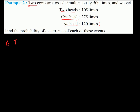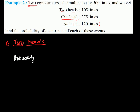Let me first find out the probability of two heads. It's quite simple if you have seen the previous video. As we have learned the probability formula — probability of getting two heads — this is what I have to find out. In the question it says there were two coins.